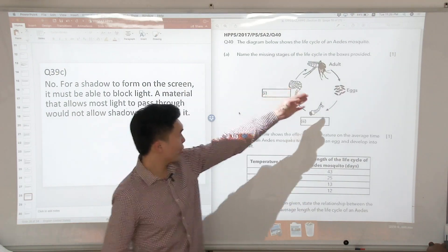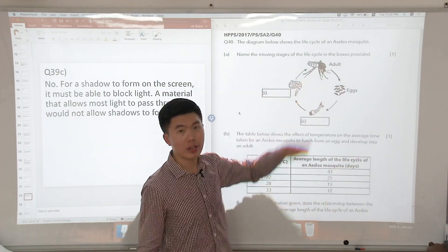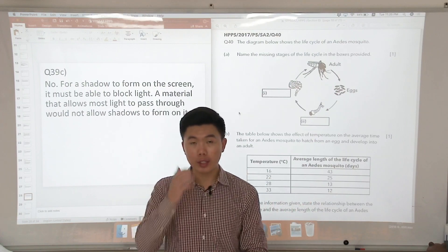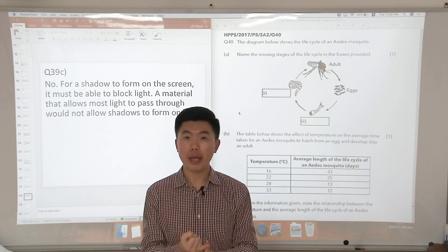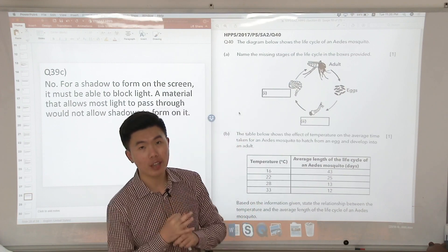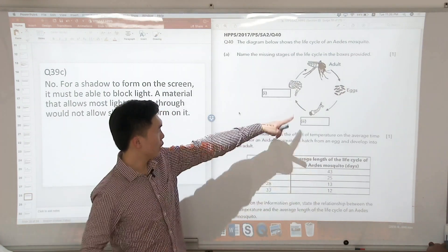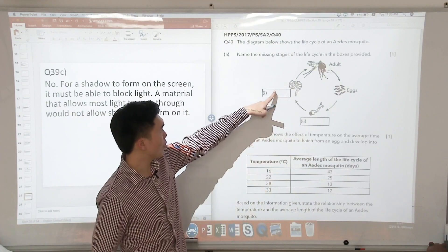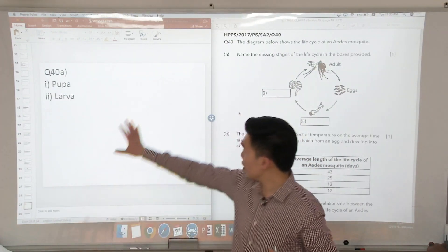So eggs, larva, pupa, adult. Okay, if you recall the other one, the three stage life cycle, the first one will be egg, in the middle you either call it the young or the nymph, and the last one is the adult. So in this case, part two is larva, part one is pupa. So this is our answer.